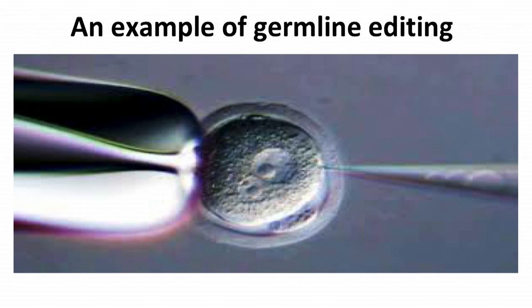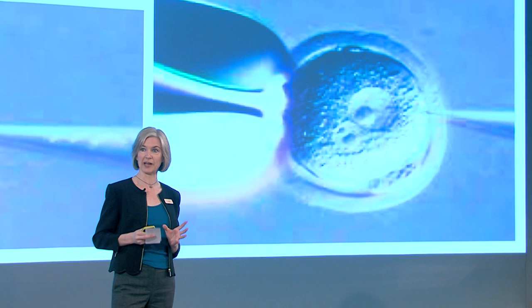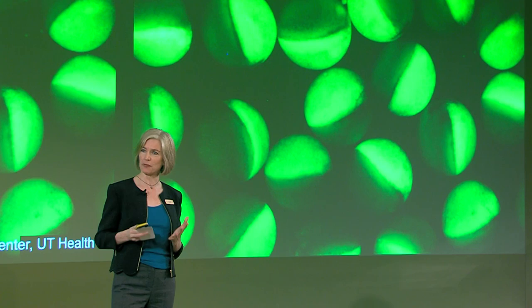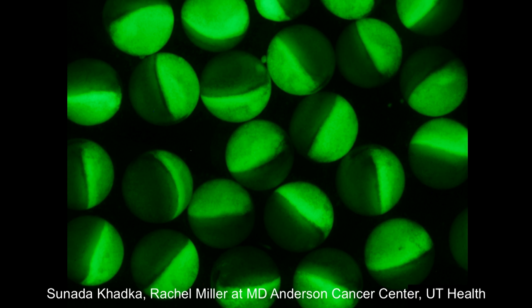So these become heritable changes. And it was appreciated early on with this technology that this works very nicely in mice. It turns out it works in lots of other kinds of organisms. I wanted to show you one example illustrating how simple this is to do and also how beautiful a result one can get with this kind of germline editing. This is an experiment that was done by a first-year graduate student at the University of Texas — Sunata Khadka — and she was kind enough to share this with me.